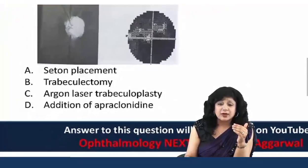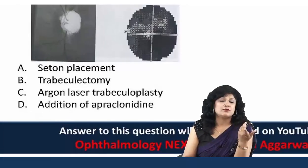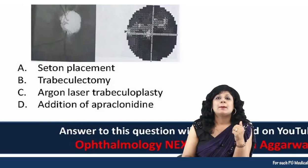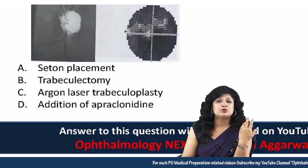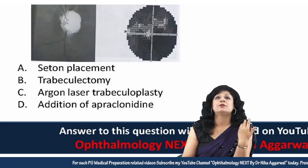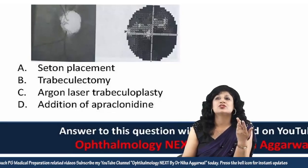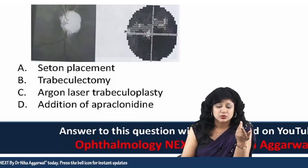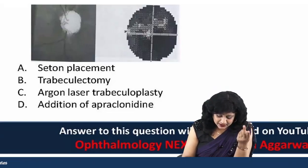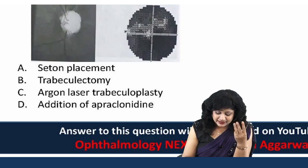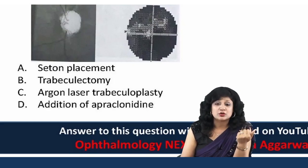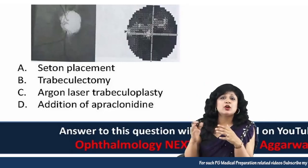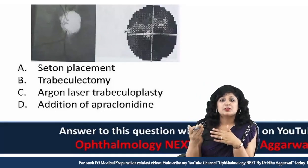What should we do when a known case of open-angle glaucoma has tried multiple drugs, IOP is still 20 to 24, visual acuity is reduced, near-total optic disc cupping is present, and visual field is progressing? The options are: A - seton placement, B - trabeculectomy, C - argon laser trabeculoplasty, and D - addition of apraclonidine. We'll start from option D.